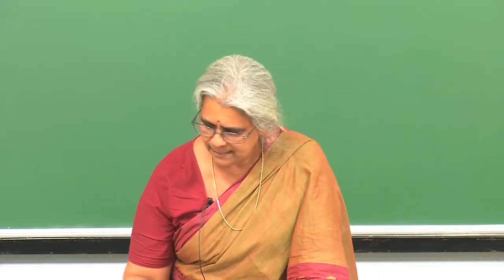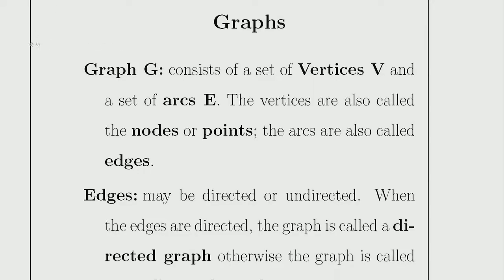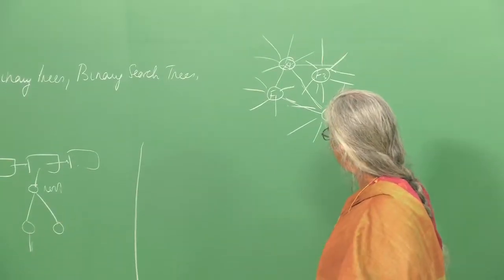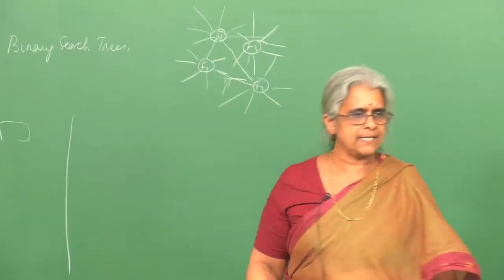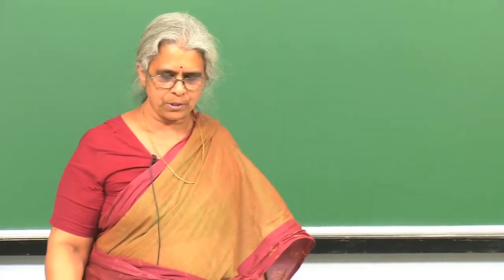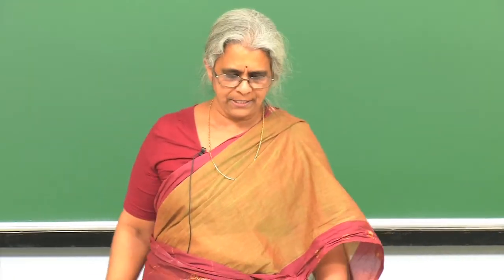A graph essentially consists of a set of vertices. The vertices here are you and your friends in the social network, and these vertices are connected by arcs if there is some connection between them — such as being friends. The vertices are also called nodes or points, and the arcs are also called edges.